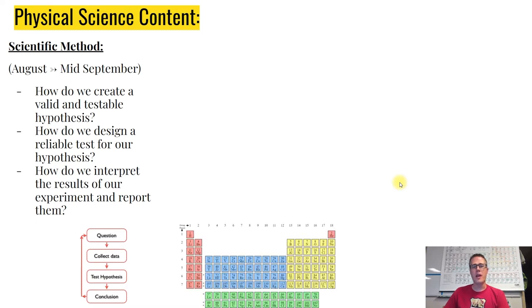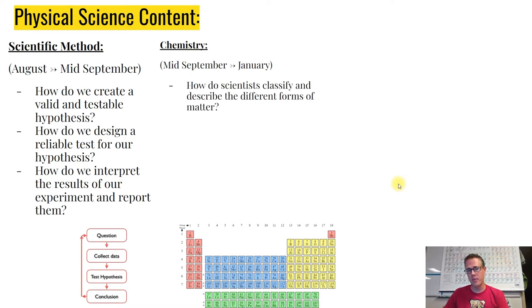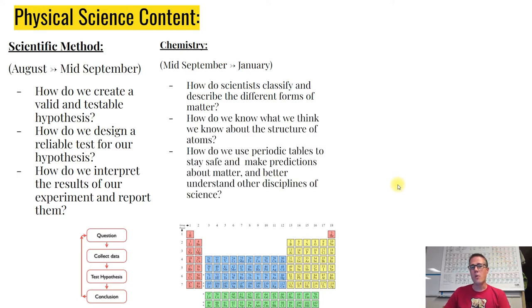After the scientific method, we'll get into chemistry. This is an intro-level course to prepare you for high school chemistry in your sophomore year. We'll talk about different forms of matter, what we know about atoms, and how to read the periodic table. The most common question I get is: do we have to memorize the periodic table? Definitely not. Our job is to understand how to use it as a tool.